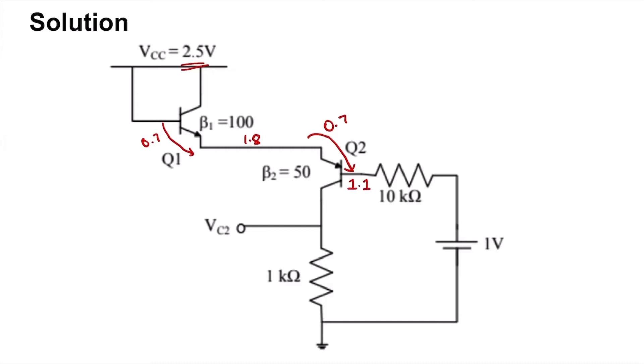That means the base current is 1.1 volts minus 1 volt divided by 10 kilo ohms. This comes out to be 0.1 milliamps.